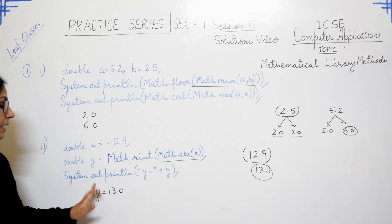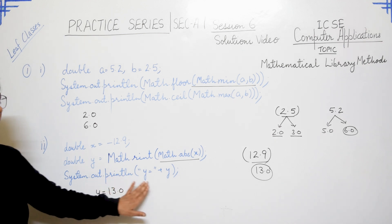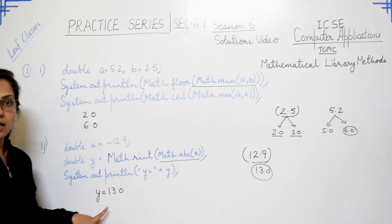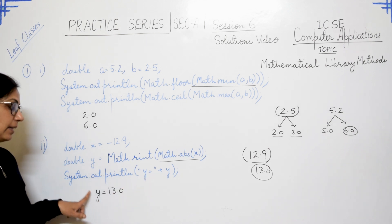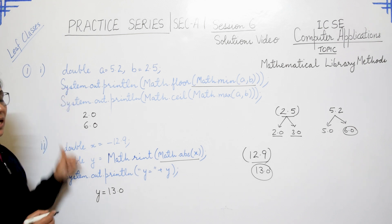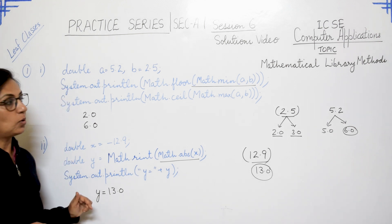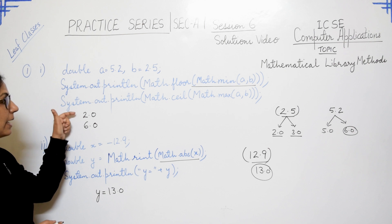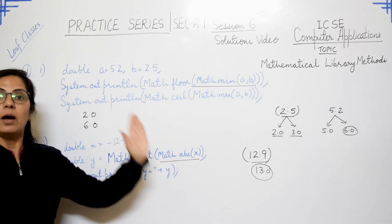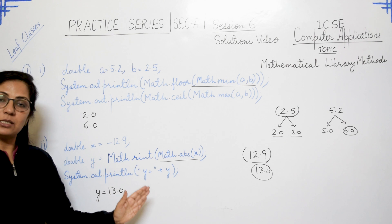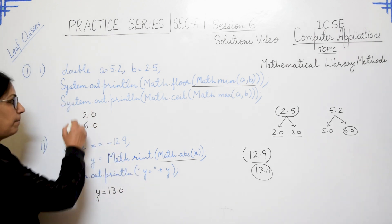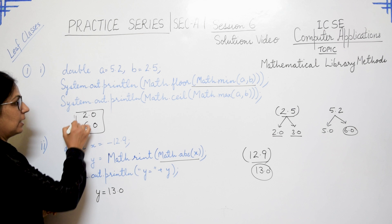Please don't write only 13.0 if something is also given in double quotes — you have to include that in your output as well. When output-based questions are asked, always write only the output. You can do the working on the side of the page, but please mark the answer correctly.